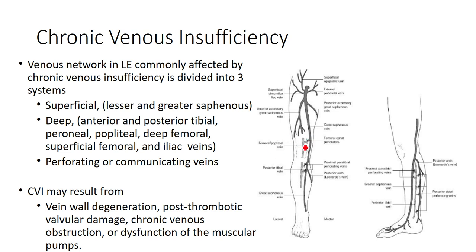CVI can result from quite a few things. There are primary causes, which may be the result of abnormal valves — some people have damage to those or abnormal formations, some sort of congenital etiology. There are also secondary causes due to vein wall degeneration, a thromboembolic event that caused damage, or dysfunction in the muscle pump. Individuals who aren't moving much, have paresis, or have a hemiplegic limb may be at risk as well.